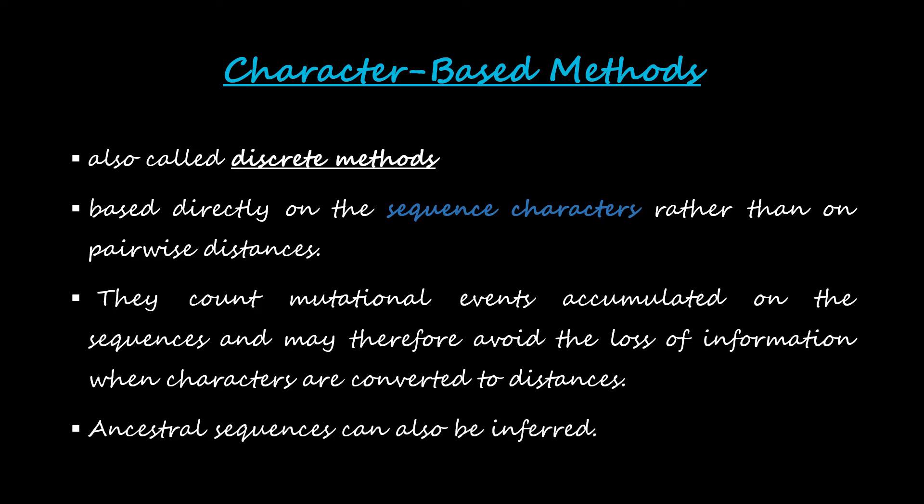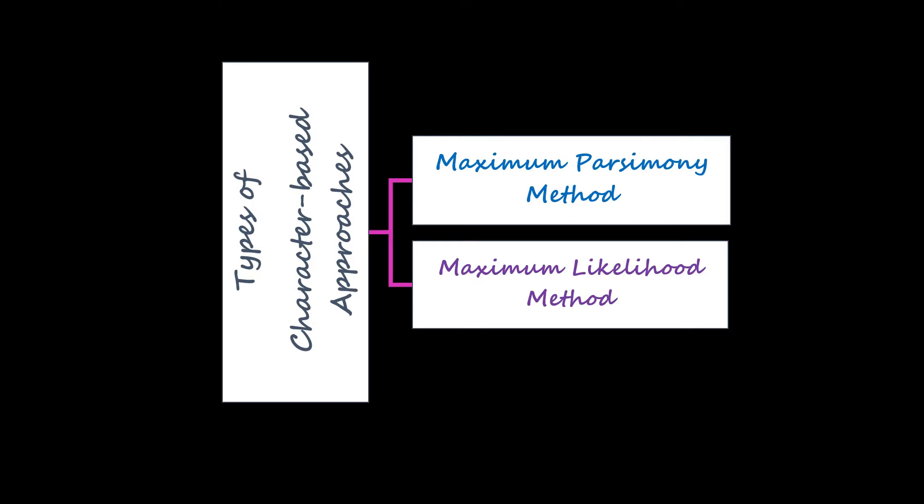Ancestral sequences can also be inferred when using character-based methods — we can go back to what the sequence of an ancestor would have been. We will also perform an exercise to help define the sequence of an ancestor. There are two types of character-based approaches: Maximum Parsimony (MP) and Maximum Likelihood (ML).